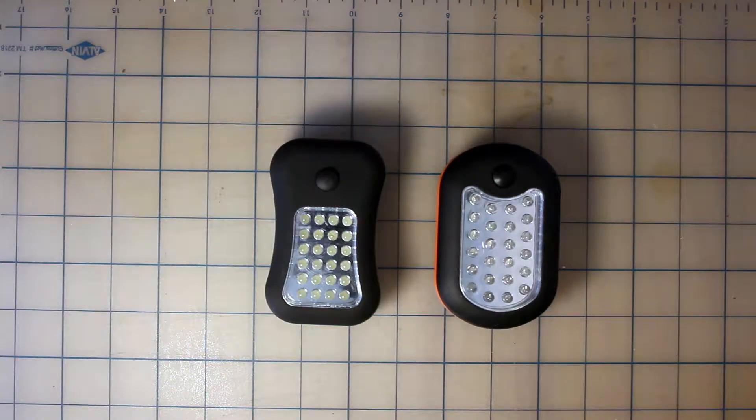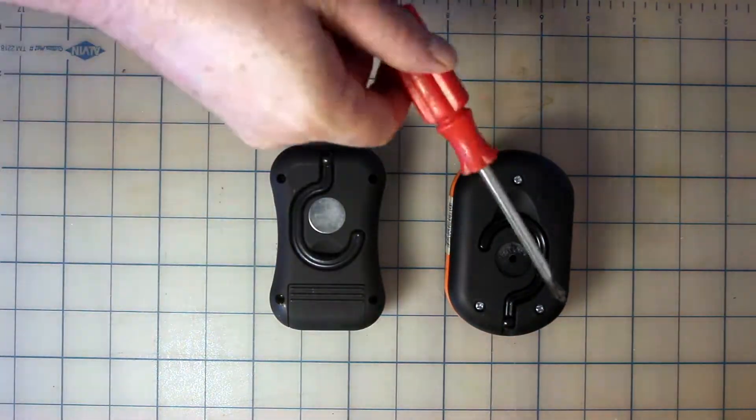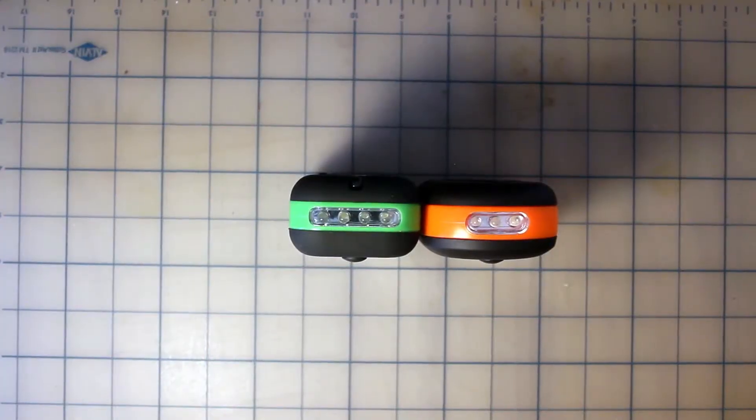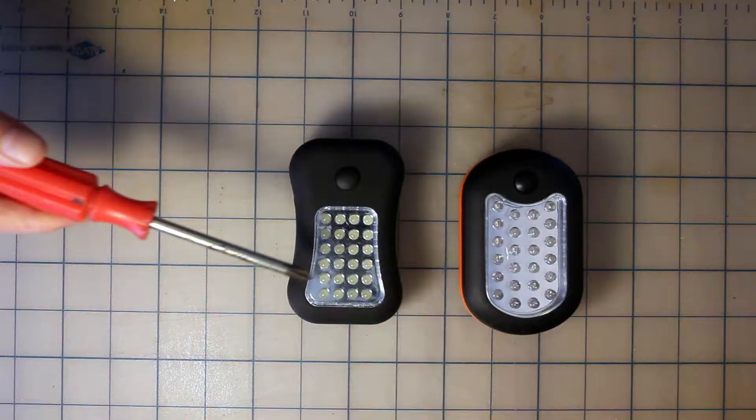I wanted to modify these popular pillbox type flashlights into a light source for my macro videos. They're inexpensive, they have two levels of brightness, and they seemed easy to hack.